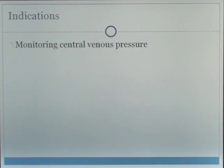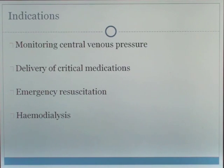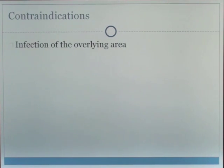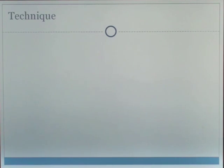The placement of a central line is indicated for monitoring central venous pressure, delivery of critical or caustic medication, emergency resuscitation, and hemodialysis. There are a few contraindications as well, such as infection of the overlying area, thrombosis of the vein, and coagulopathy — which is a relative contraindication — but we should be aware of any coagulation problems in order to avoid complications.